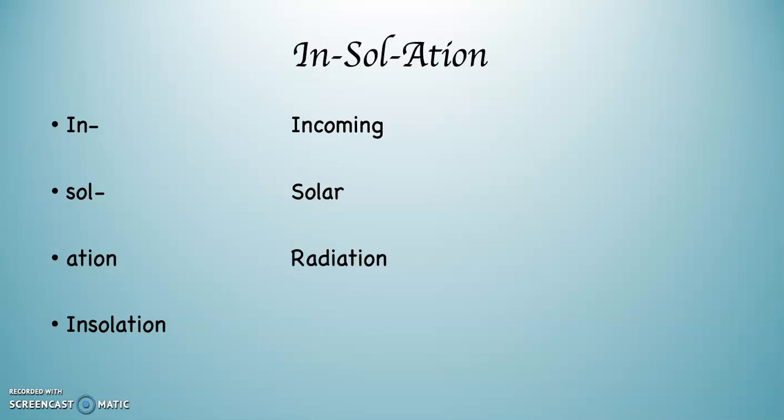That energy that comes from the sun that we run into and then begins to enter into our Earth's system at the top of our atmosphere, three or four hundred miles above us, we refer to that as insolation, incoming solar radiation.